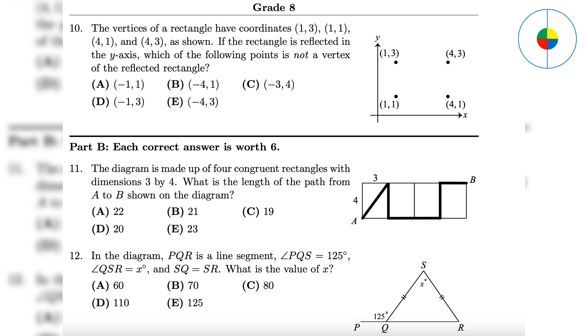Question 12: Since angle PQS is 125 degrees, angles SQR and SRQ are both 55 degrees. X is 180 minus 55 minus 55, so X is 70.